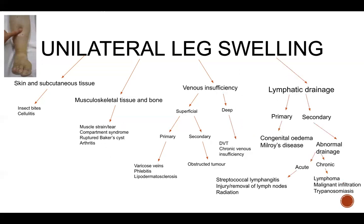After considering venous causes, let's think about the lymphatic system. We need to consider causes of primary lymphedema such as Milroy's disease, which begins in infancy and causes lymph nodes to form abnormally. Another primary lymphedema condition is Meige's disease, which starts around puberty or develops during pregnancy, and has a late-onset form also known as lymphedema tarda, which tends to occur after the age of 35.